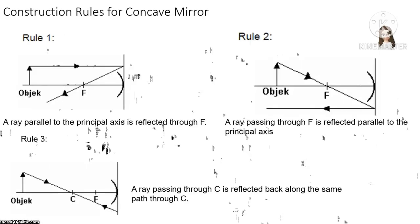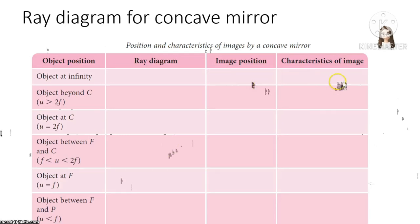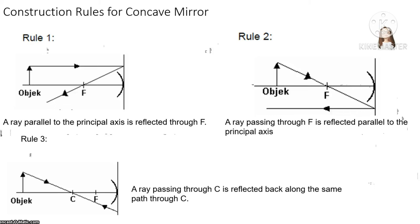How to construct the ray diagram for a concave mirror: Rule 1 — a light ray parallel to the principal axis is reflected through F. Rule 2 — a ray passing through F is reflected parallel to the principal axis. Rule 3 — a ray passing through C bounces back along the same path through C. From these three rules, you need to draw just two to determine the image position and characteristics, though you can draw all three.